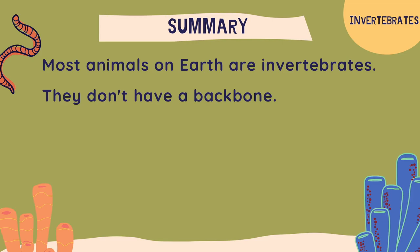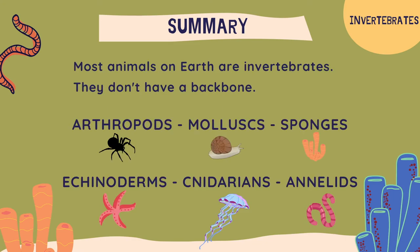In summary, we know that most animals on Earth are invertebrates — approximately 97% of all animals — and they don't have a backbone. Now let's have a look at the six groups. We have arthropods that include arachnids, insects, and crustaceans. We have mollusks like snails, squids, and octopus. And another group is sponges.